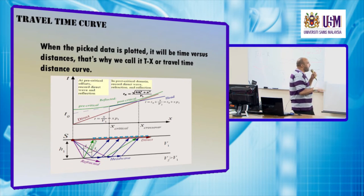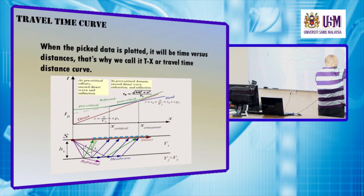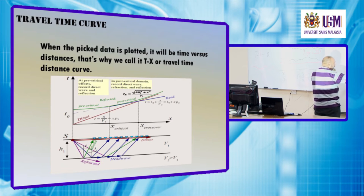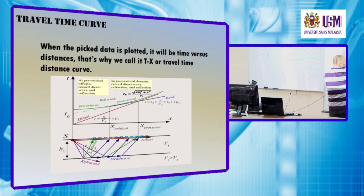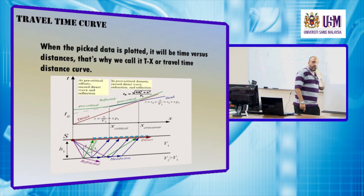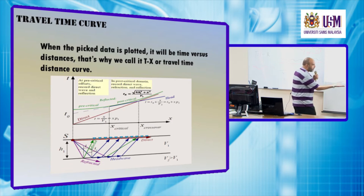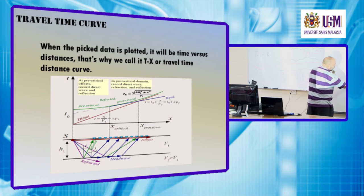We can determine velocities from the slopes of the segments. The slope of the direct wave represents the velocity of the weathered layer or surficial soil. The slope of the head wave represents the velocity of the bedrock.